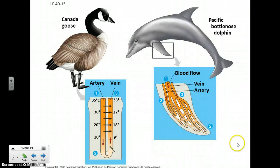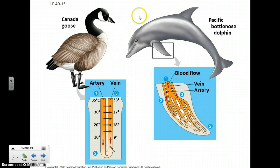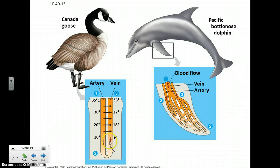In maintaining homeostasis, the skin is involved, and with the circulatory system we take advantage of a process known as counter-current heat exchange, where blood flowing through the arteries from the core of the body is relatively warm. As it goes out to the extremities, it runs alongside veins coming from the extremities that have cooled down, basically giving up heat to the blood in the veins running back towards the core.